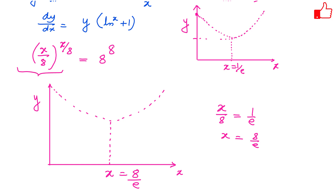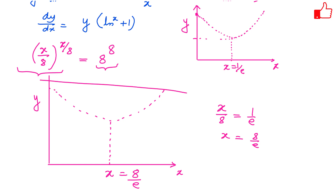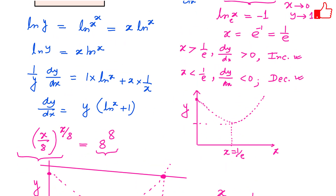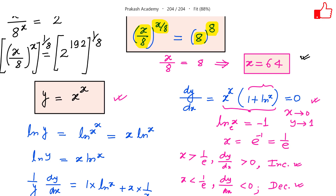The left-hand side is x over 8 raised to the power x over 8, which follows this curve. The right-hand side is 8 raised to the power 8, a constant value. Since this constant value is large and the minimum of the left-hand side curve is very small — essentially near 1 — the horizontal line representing the right-hand side crosses the curve at only one point. Therefore the equation has only one solution: x equals 64.